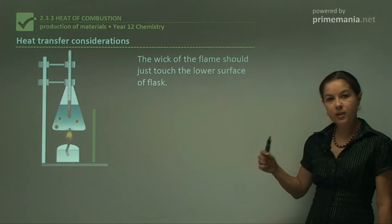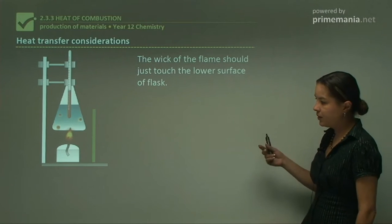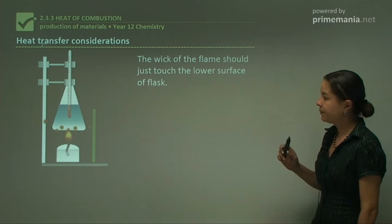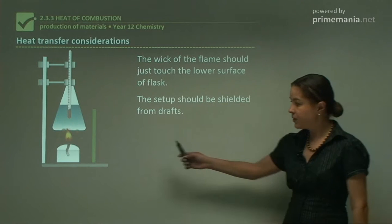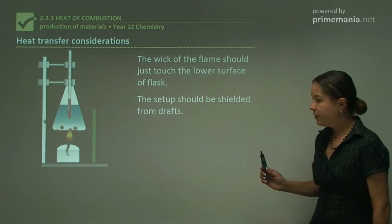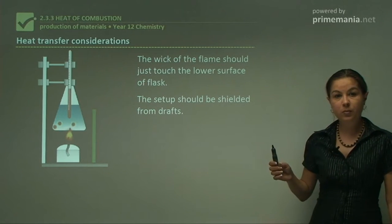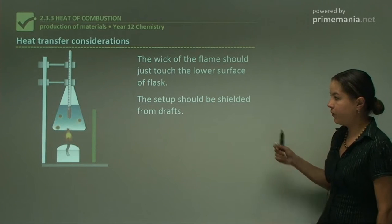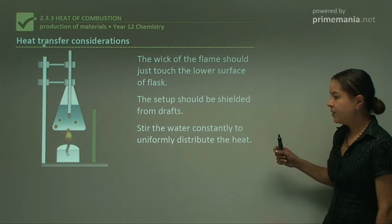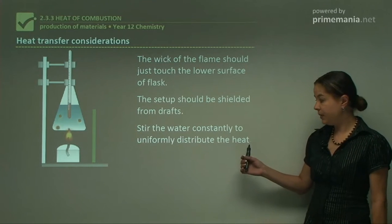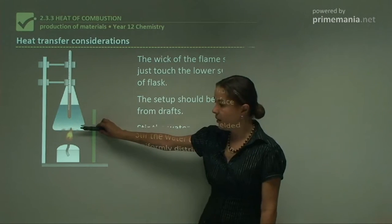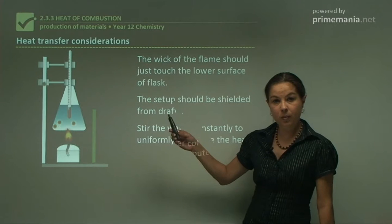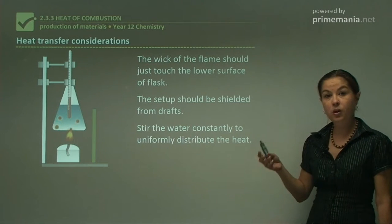And for every time that you do this for the different alkanols—methanol, ethanol, propanol—make sure that that wick is at exactly the same height for each experiment. The setup should be shielded from drafts, so remember you need a heat shield here. And a good source of that in the school laboratory would be a heat mat, but anything that's non-flammable and heat resistant would work. You'll have to stir the water constantly to uniformly distribute the heat, so you're not just getting heat at the bottom but throughout all the water. But just remember, never stir with a thermometer because you might break it and you'll get spillage of toxic mercury.